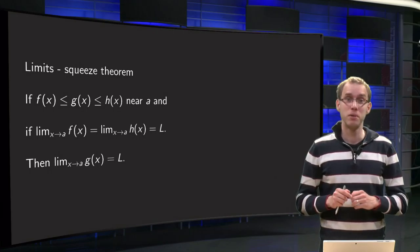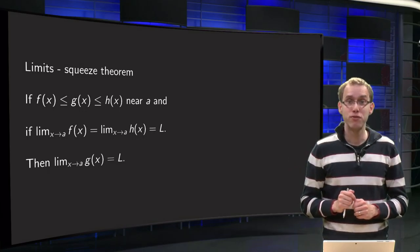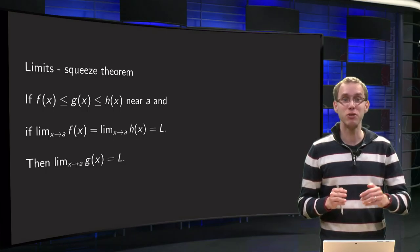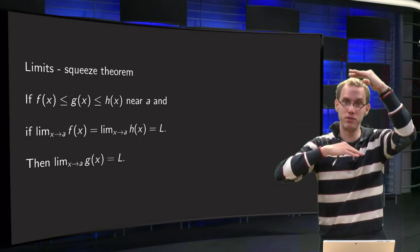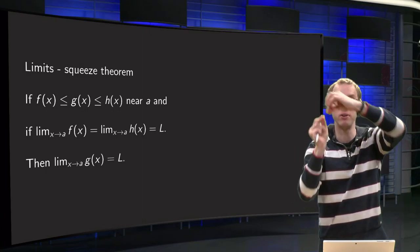Suppose you have a function g(x) between f(x) and h(x), and suppose furthermore that the limits of f and h at a certain point are equal to value L. So we have our g in between f and h, and f and h both approach the same value L.